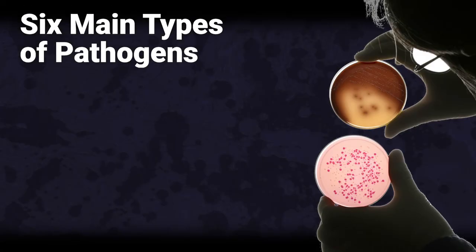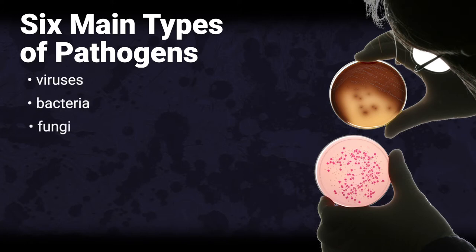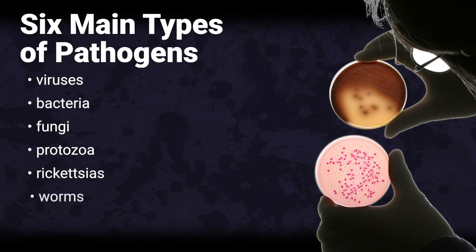Six main types of pathogens. Other microbes can cause illness and disease. Disease-causing microbes are known as pathogens, or germs. There are six main types of pathogens: viruses, bacteria, fungi, protozoa, rickettsia, and worms.